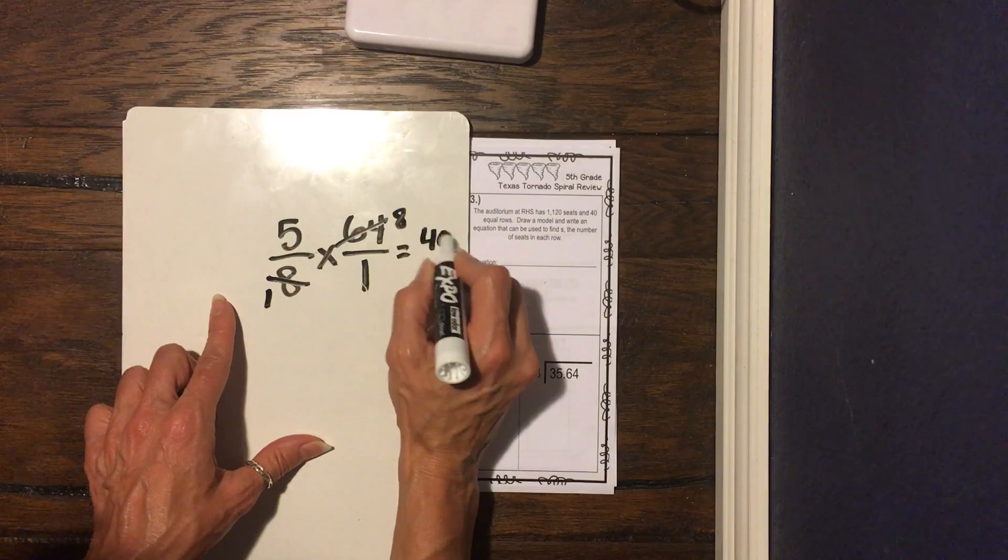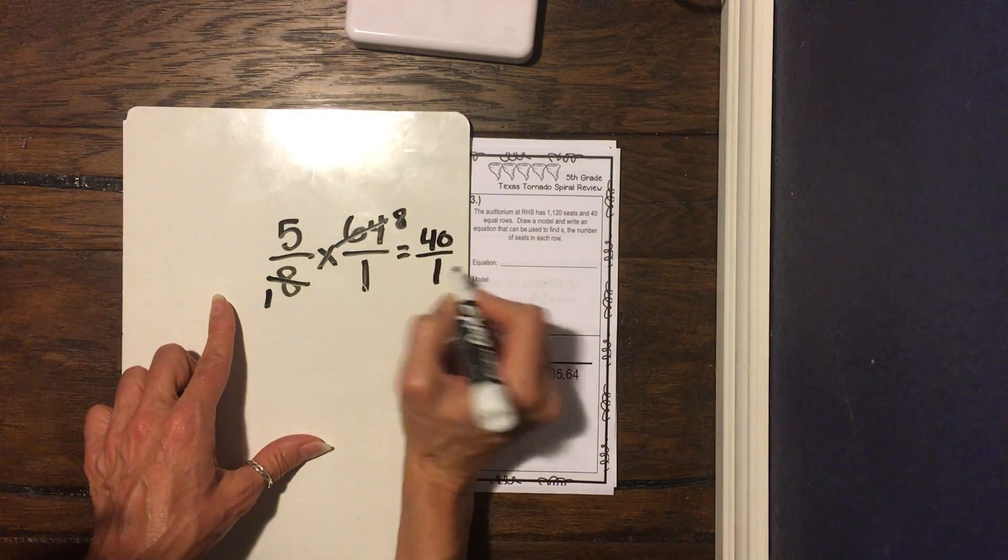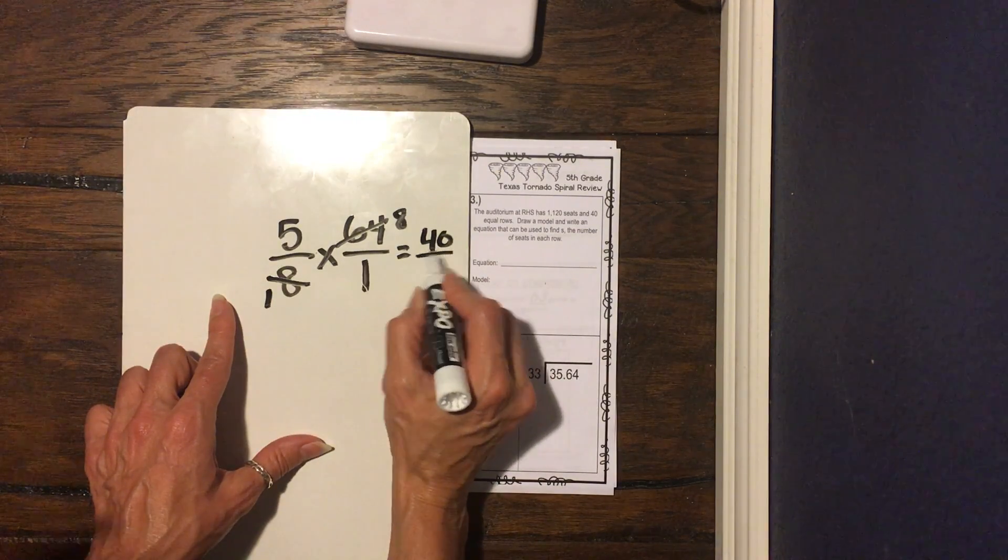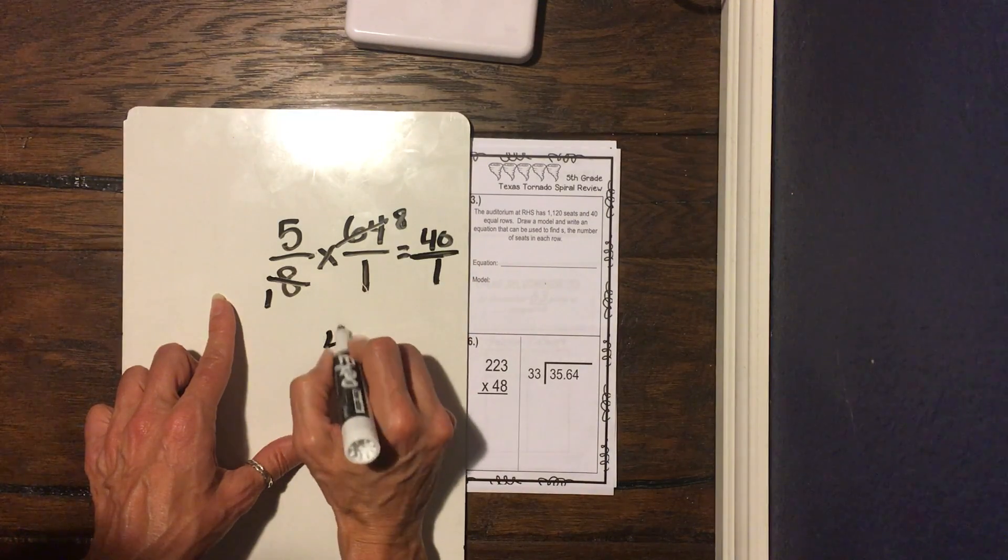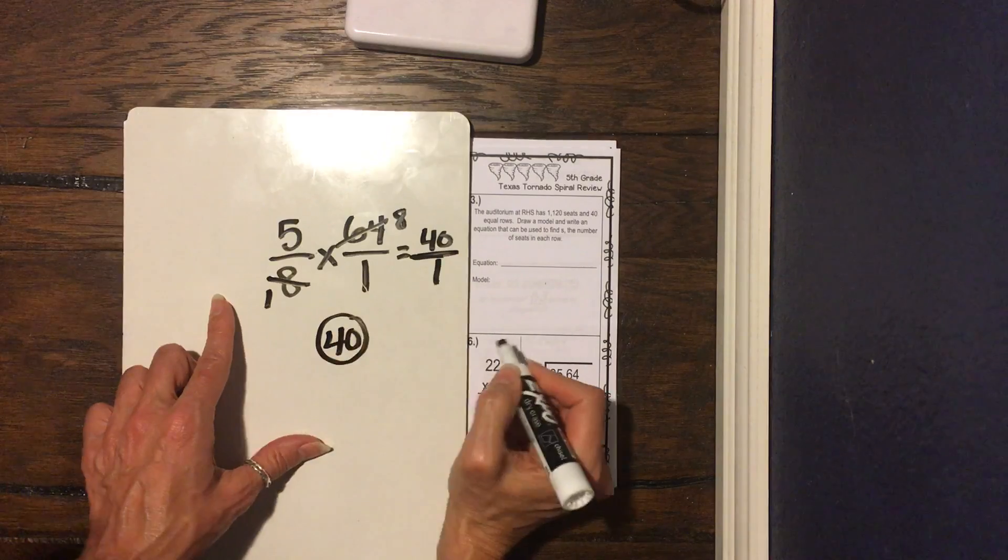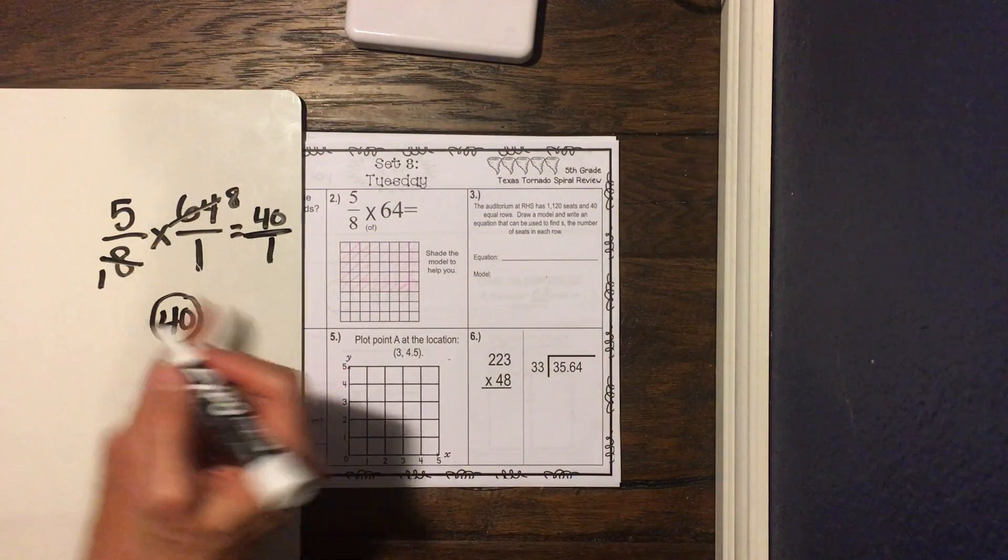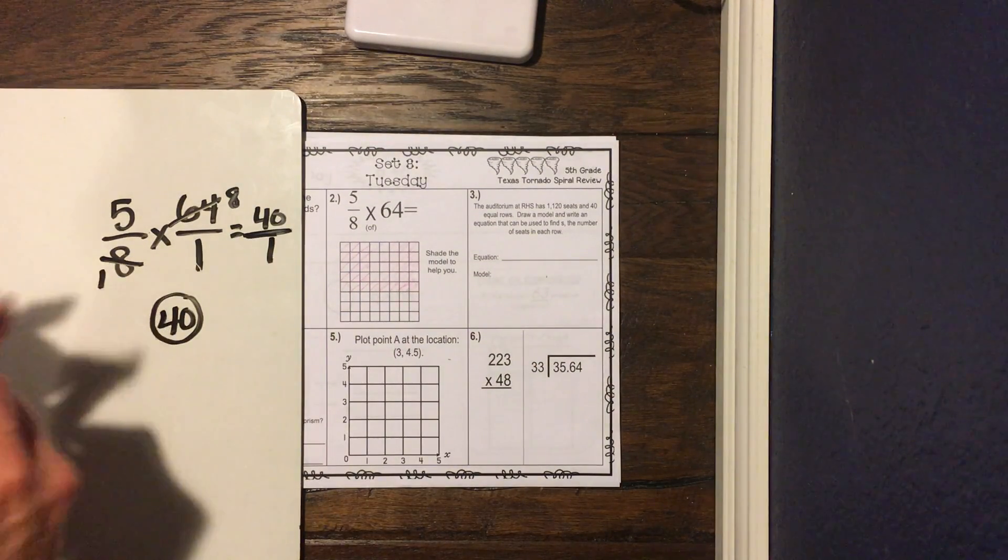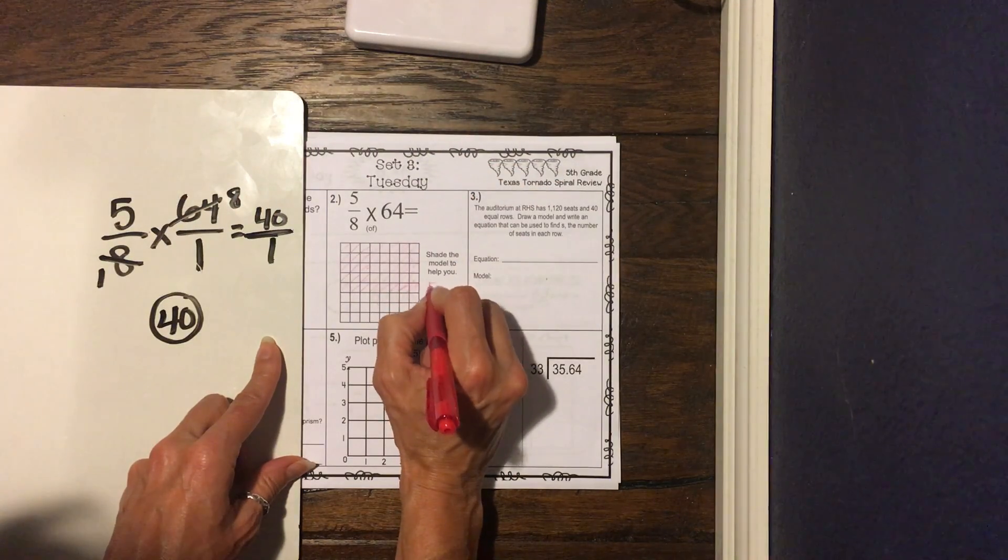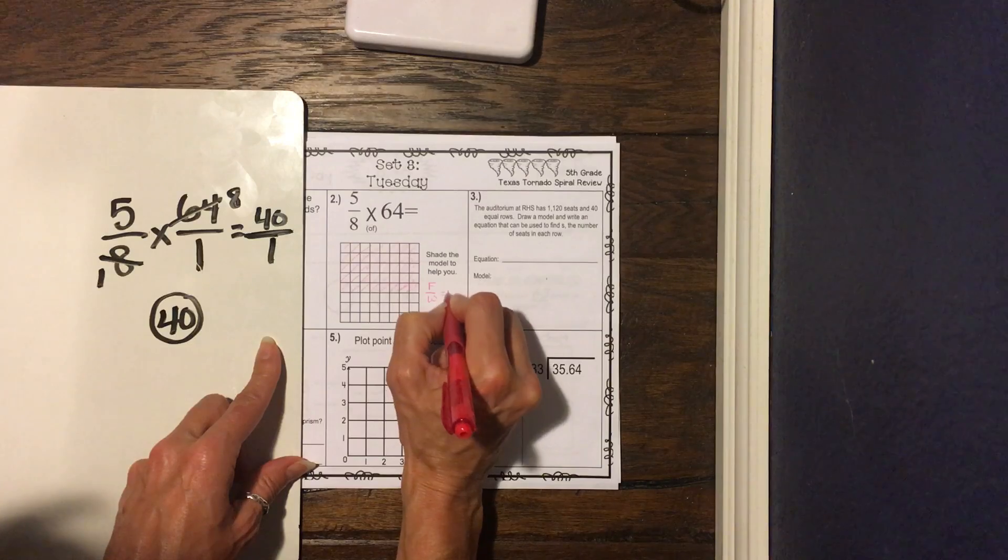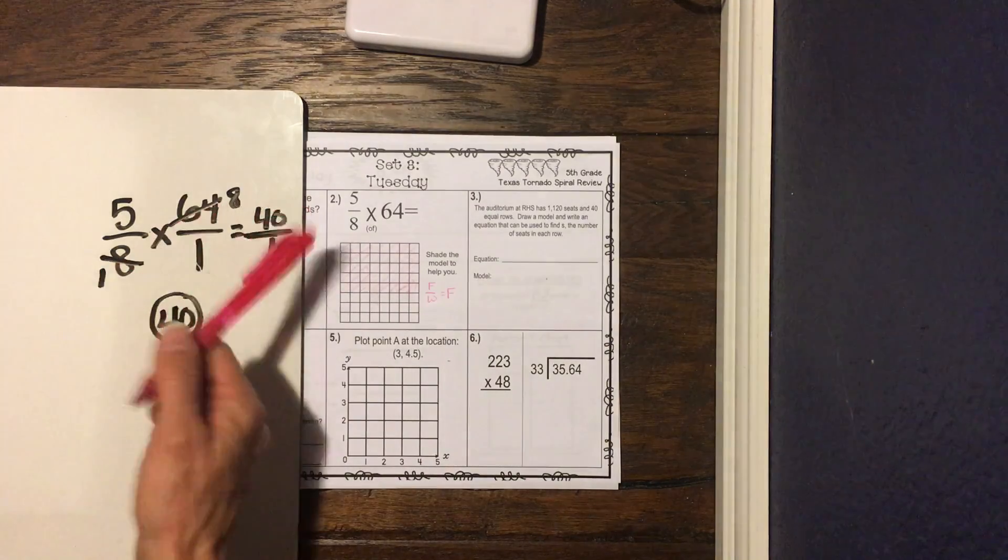And now we're just gonna multiply straight across. So five times eight is 40, and one times one is one. So remember guys, this is a division sign. So 40 divided by one is just the whole number 40.